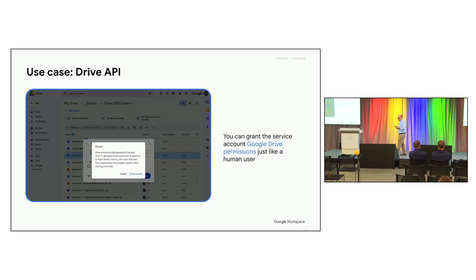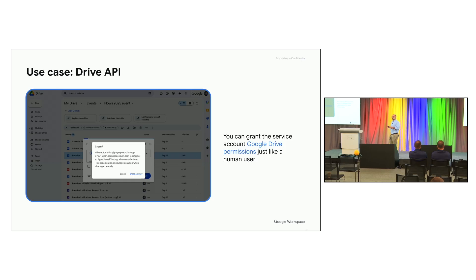Another use case is Drive APIs. Although service accounts don't get their own drive, they can still act on files. The way you do that is by giving them permission via their email address — you can grant them access to certain files, folders, or shared drives. Based on those permissions, they can execute actions on that data: viewer access allows copying and viewing files, while editor access allows moving files around.